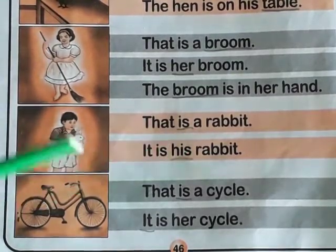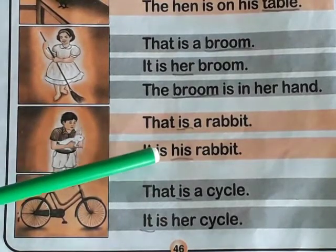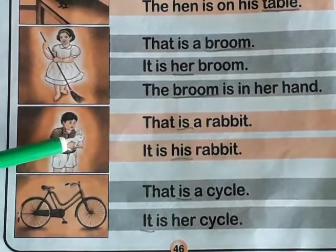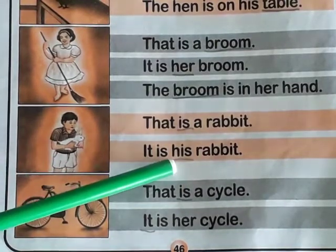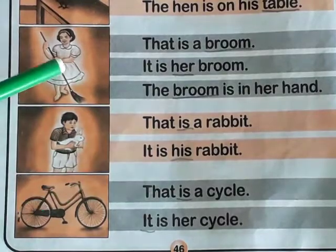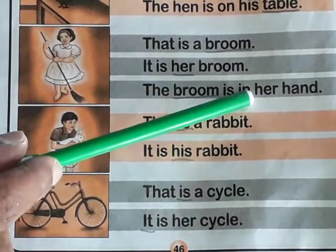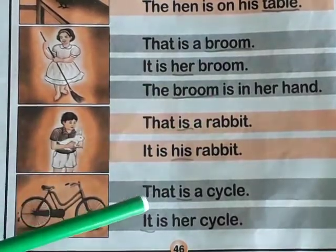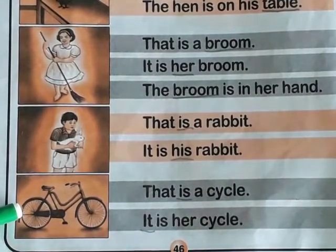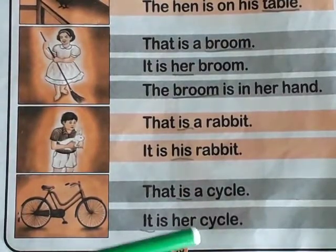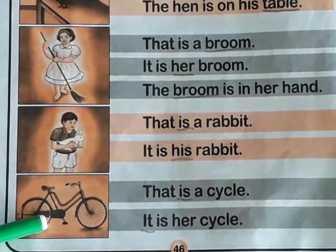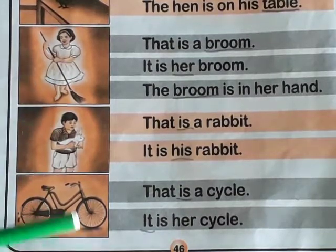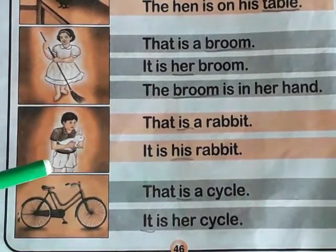That is a rabbit. This is the picture of a rabbit. It is his rabbit. He is a male person, so use his. And this is a female person, so use her. Her is used for a female person and his is used for a male person.